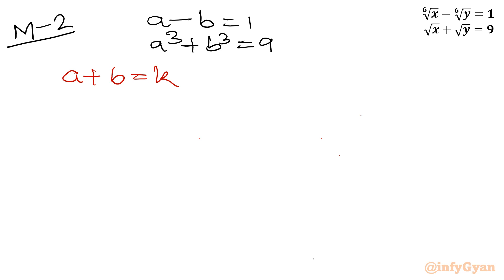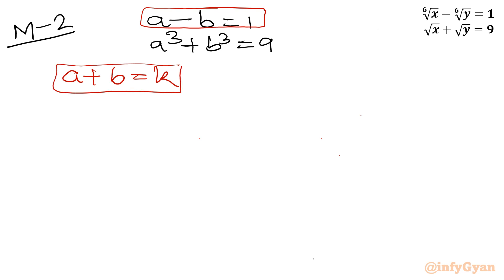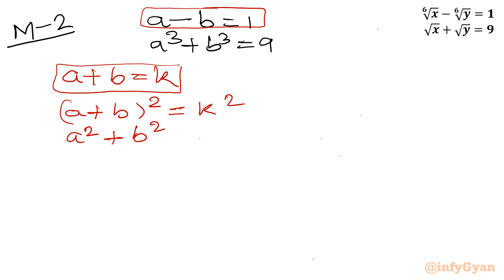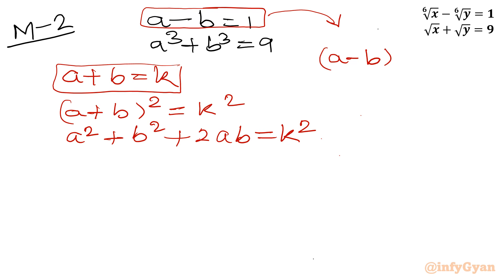Squaring a plus b equals k gives (a+b)² equals a² plus b² plus 2ab equals k². Squaring a minus b equals 1 gives (a−b)² equals a² plus b² minus 2ab equals 1.